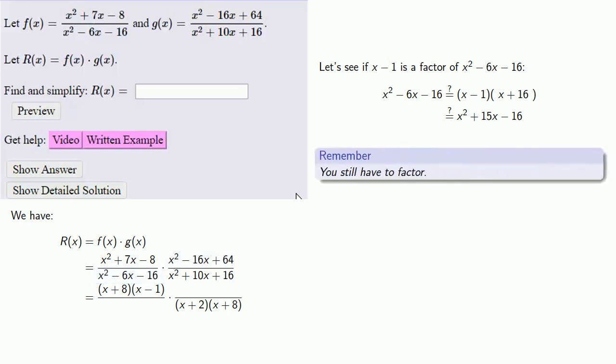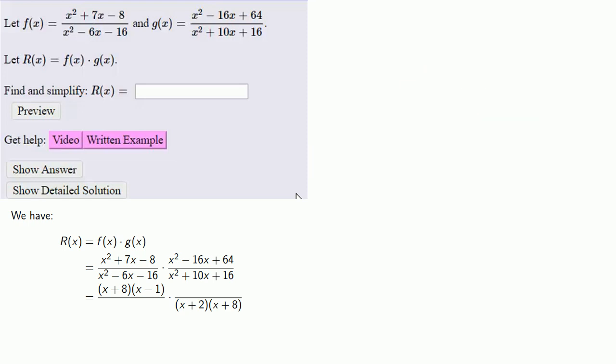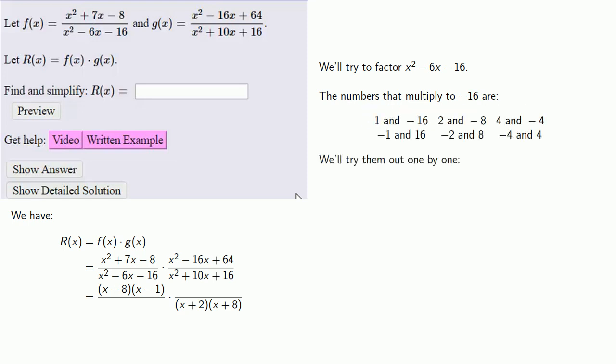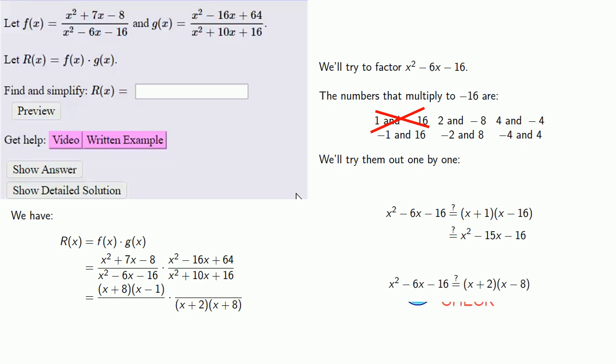And we can take our choice, and let's try to factor x squared minus 6x minus 16. And so we need numbers that multiply to minus 16. And we have to try them out one by one. So we'll try 1 and negative 16. Does x squared minus 6x minus 16 factor as x plus 1 times x minus 16? Nope. But how about x plus 2 times x minus 8? And success!